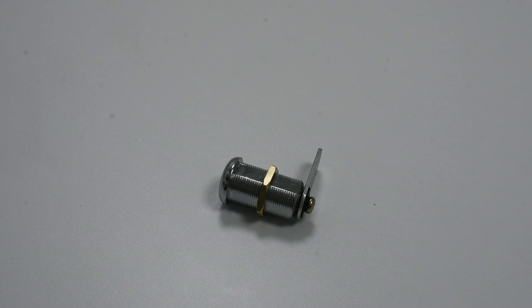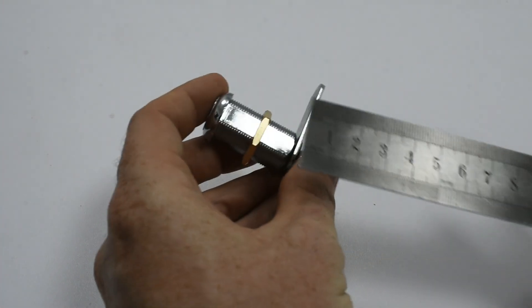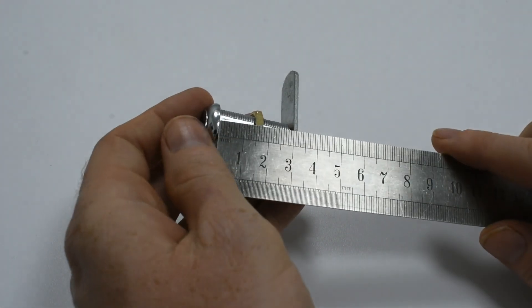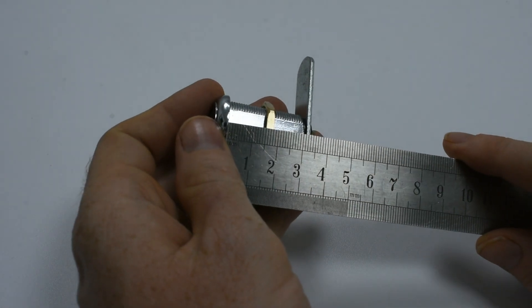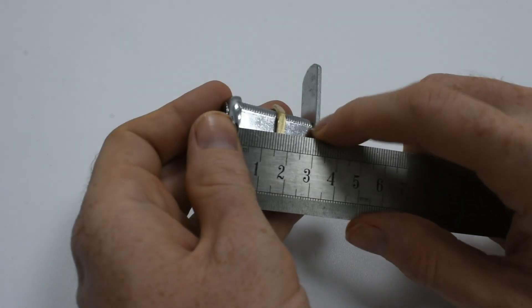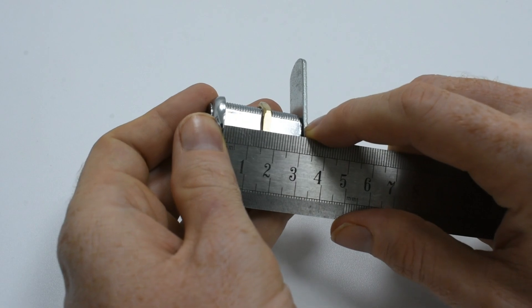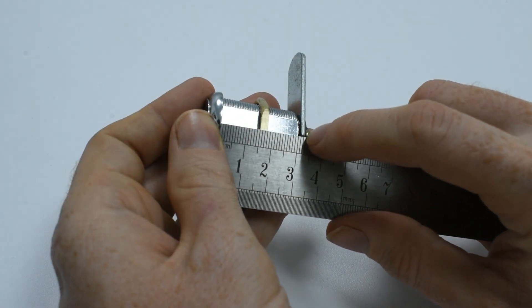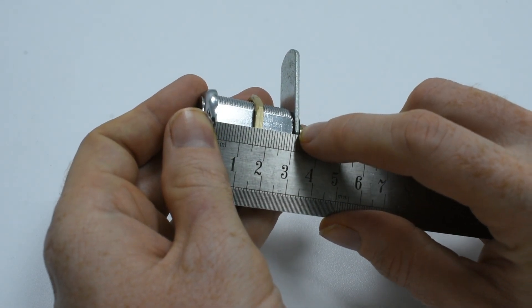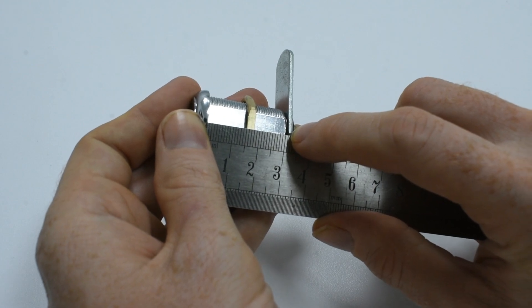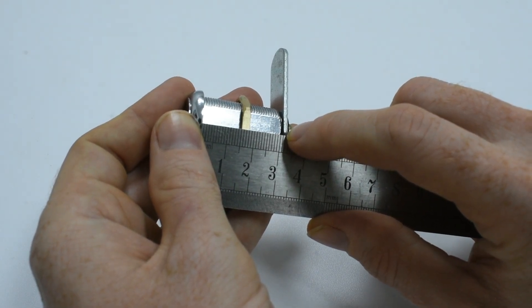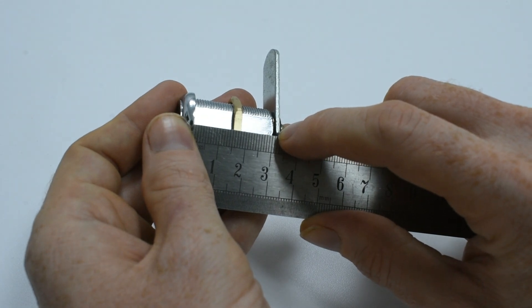Measurement A is the body length. This is measured from the base of the face of the cylinder back to the furthest point of the body. Approximately 31 or 32 millimeters of body length. This is officially noted as being 32 millimeters for this cam lock.